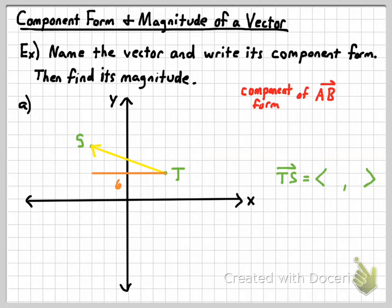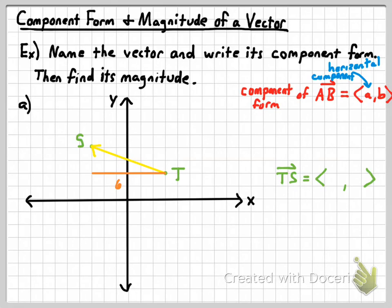Now I'm going to generalize. Whenever you're writing the component form of some general vector AB, you put those two little brackets and list two values — a horizontal component A and a vertical component B. It looks similar to listing an X and Y coordinate, but it's not exactly the same. The first number represents the horizontal component. For vector TS, the horizontal component is six — you go six units to the left. You use signs to determine direction: going right is positive, going left is negative. Since it's going left, the horizontal component is negative six.